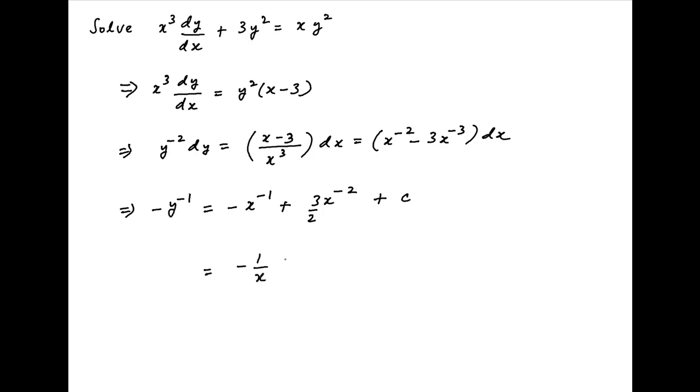The right-hand side can be written as minus 1 upon x plus 3 upon 2x square plus c and this is equal to the left-hand side that is equal to minus 1 upon y.